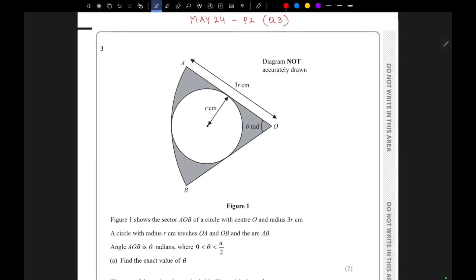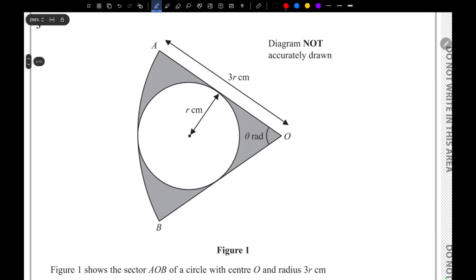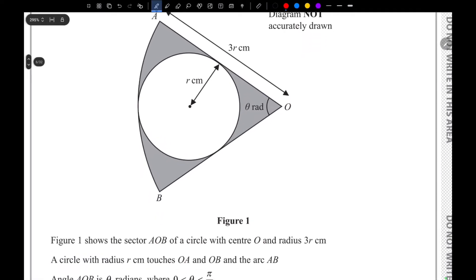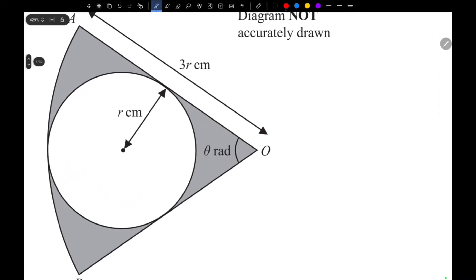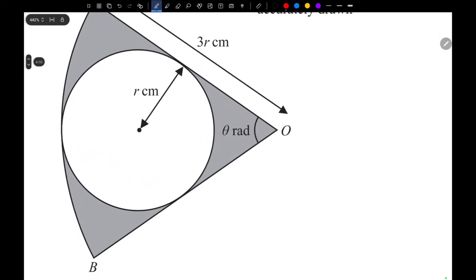Alright, so today we'll solve May 24th paper 2 question 3, IGCSE pure maths. They have given a sector of a circle, which is sector AOB with the center point O. So this is the center point.